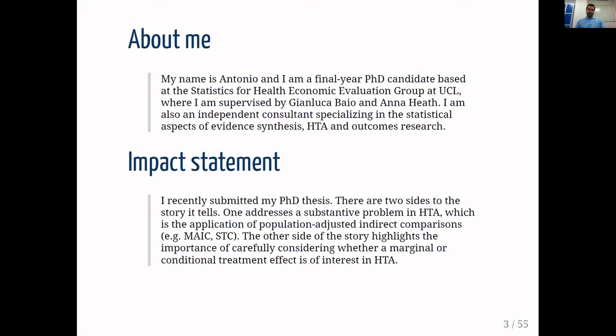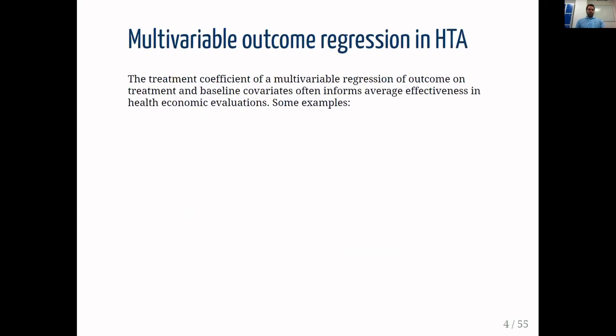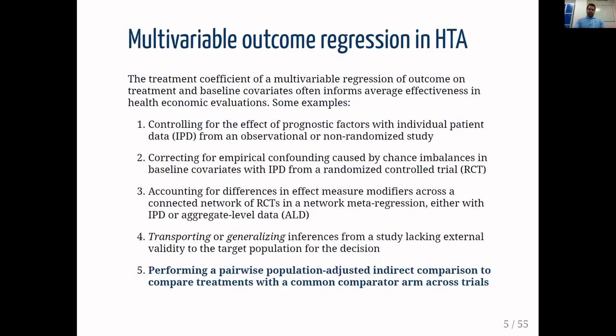Treatment effects can be marginal and they can be conditional, and these different effects have different interpretations. For population level reimbursement decisions in HTA, my view is that the marginal effect is of interest. Usually we will use a multivariable outcome regression — a regression model of outcome on treatment and covariates — to inform average effectiveness in health economic evaluations, and we use this outcome regression to account for covariate imbalances between studies or between treatment arms.